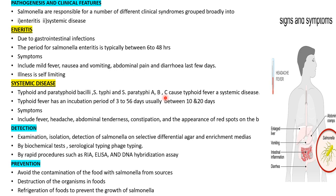Typhoid fever has an incubation period of about 3 to 56 days, usually between 10 and 20 days. This means after consuming contaminated food, symptoms may appear 10 to 20 days later, making it difficult to recall the source. The result is this systemic disease known as typhoid or paratyphoid.